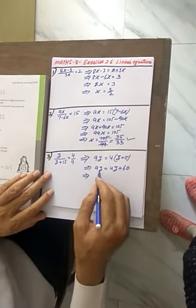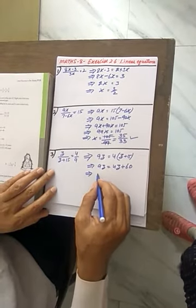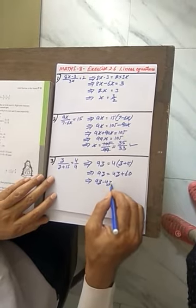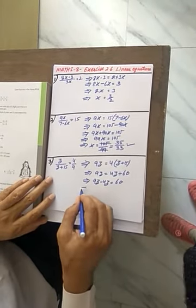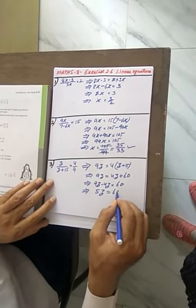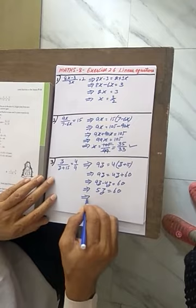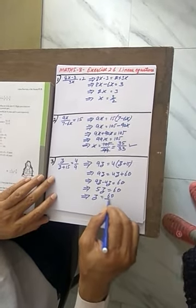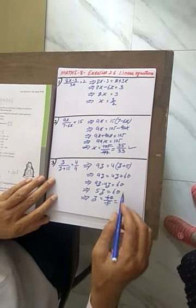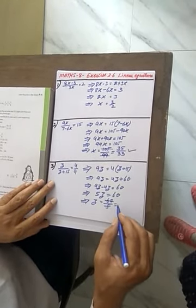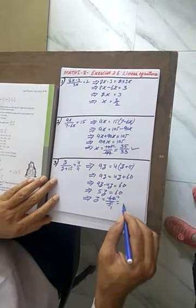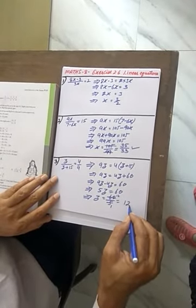These are the variables. We'll take them left side. 9z minus 4z gives you 60. That means 5z is equal to 60 and z is equal to 60 upon 5. When you divide by common factor 5, that means the value of z is 12.